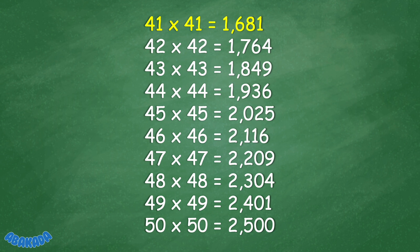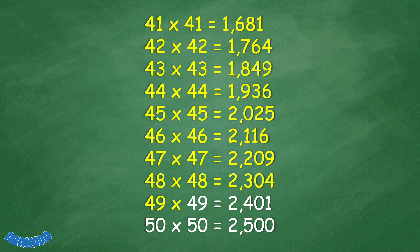42 times 42 equals 1,764. 43 times 43 equals 1,849. 44 times 44 equals 1,936. 45 times 45 equals 2,025. 46 times 46 equals 2,116. 47 times 47 equals 2,209. 48 times 48 equals 2,304. 49 times 49 equals 2,401.